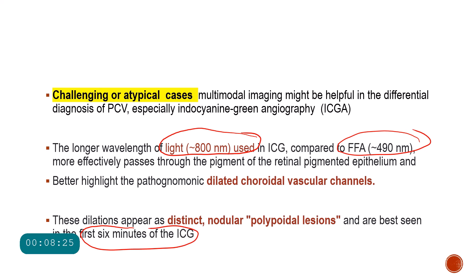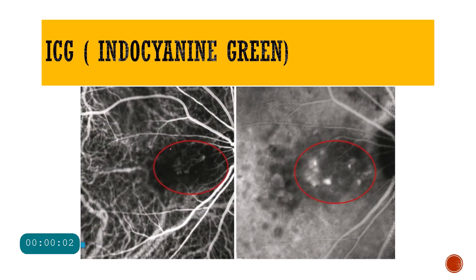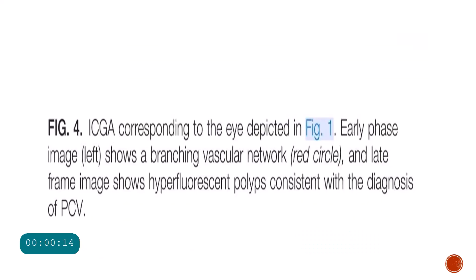In this ICG picture, you can see the branching vascular networks emerging, and you can see certain hyper-reflective areas in the first six minutes — this indicates that this is a polypoidal choroidal vasculopathy.